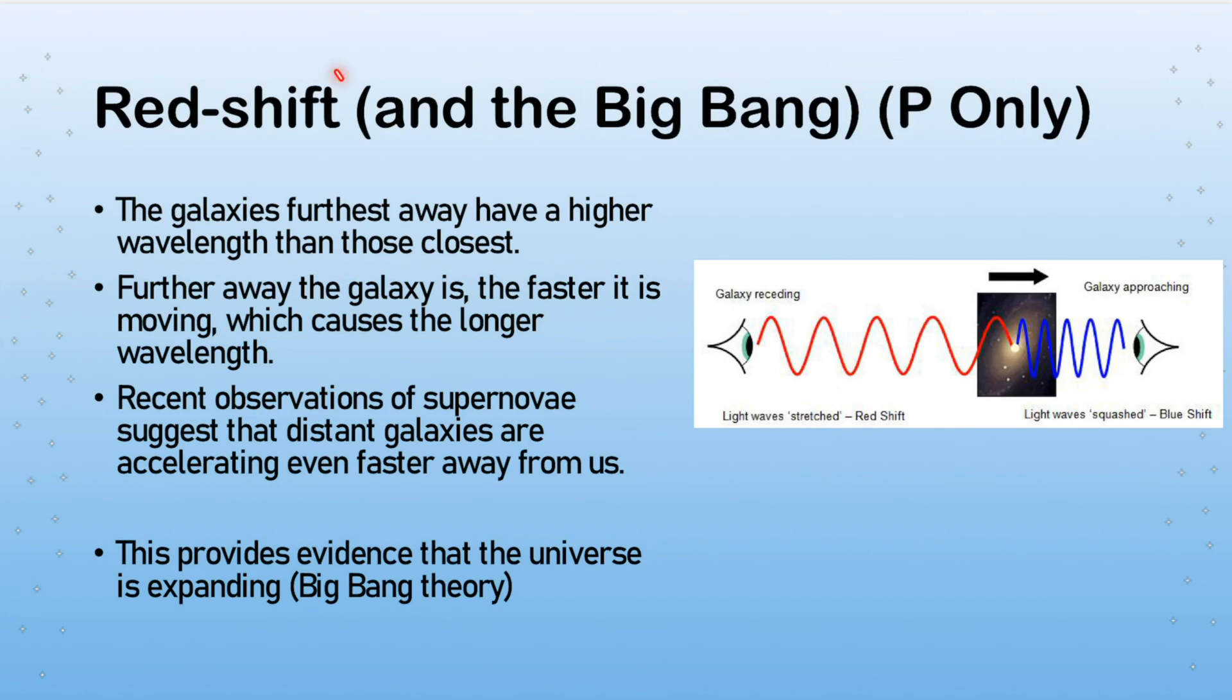So the evidence for the Big Bang is related to this idea of redshift, which is basically that the galaxies furthest away have a higher wavelength than those that are closest. Most galaxies should have pretty much the same wavelength if they're not moving, because they're all kind of the same type of star. However, these stars when they're moving end up having the doppler effect applied to the wavelength of light that they produce. So if it's moving away from us, you end up having the stretched wavelength which leads to a red shift - the light becomes more red. If it's moving towards us, the wavelength gets squished, gets shortened, and so the wavelength becomes more blue.